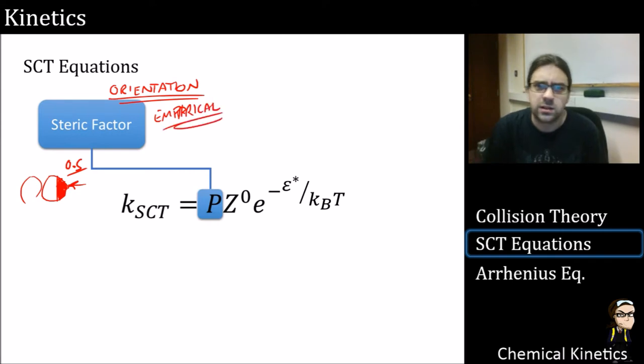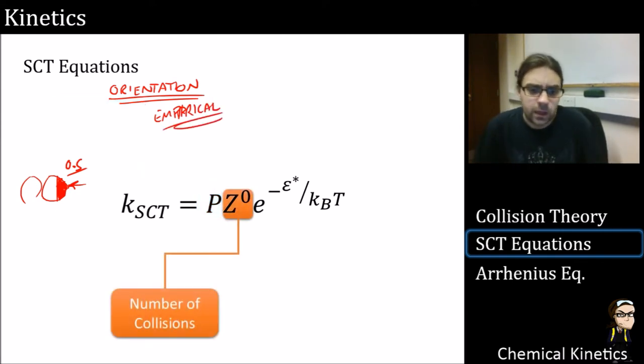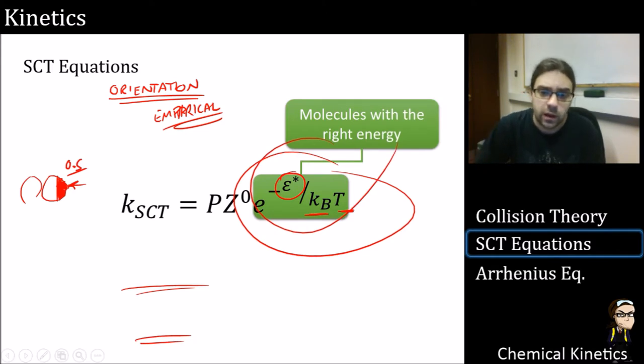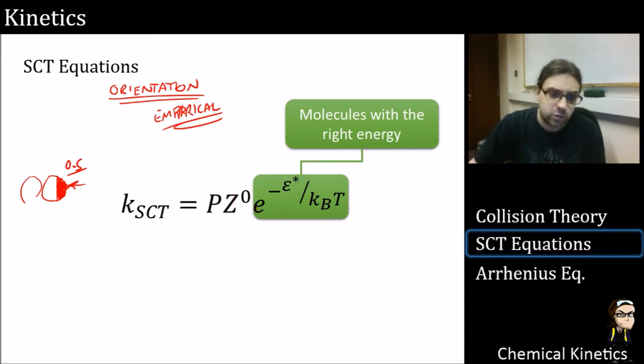We also have the number of collisions, so this is fairly obvious - the more collisions that happen, the higher the rate. So finally the molecules with the right energy - that is our factor. We have that Boltzmann factor here and we divide it through by the Boltzmann constant and temperature and e raised to the whole thing. So we denote that, if you've noticed, not with just k but k_SCT or k simple collision theory. That means we've derived this semi-empirically and with a bit of theory involved.